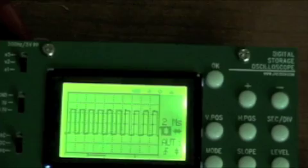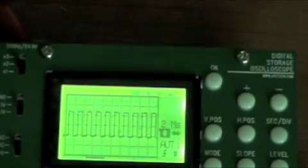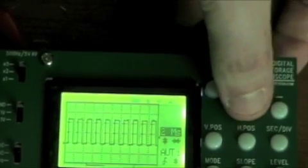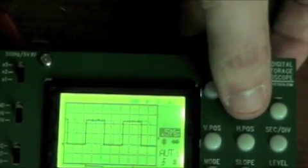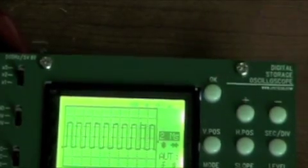So I change the vertical position. If I want to move it left and right, I can adjust the horizontal position. If I want to change the time per division. You see?